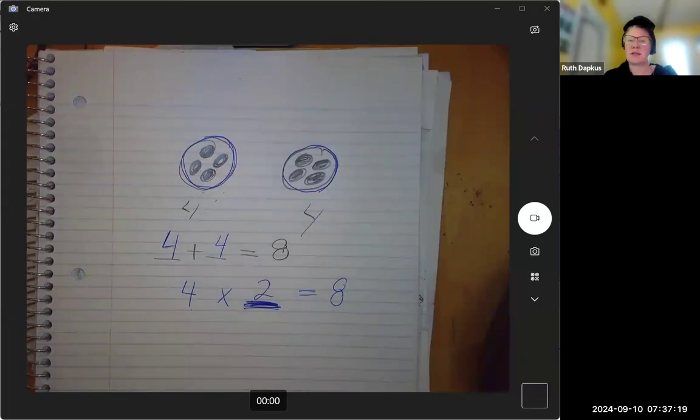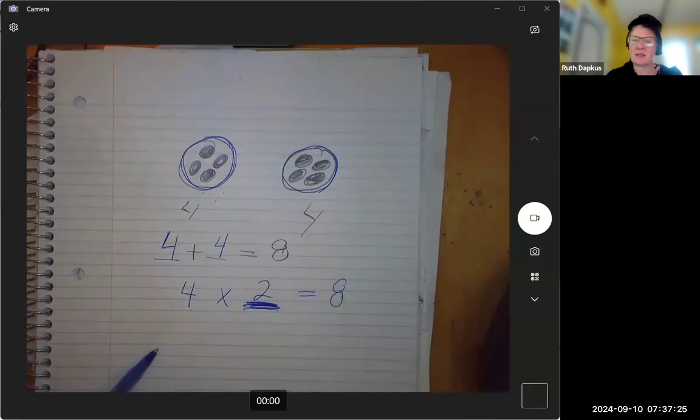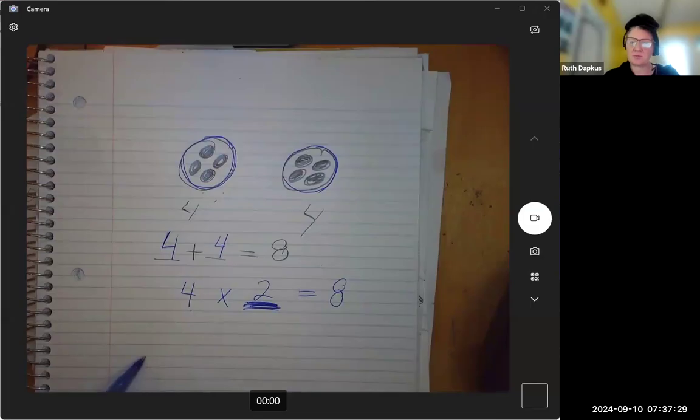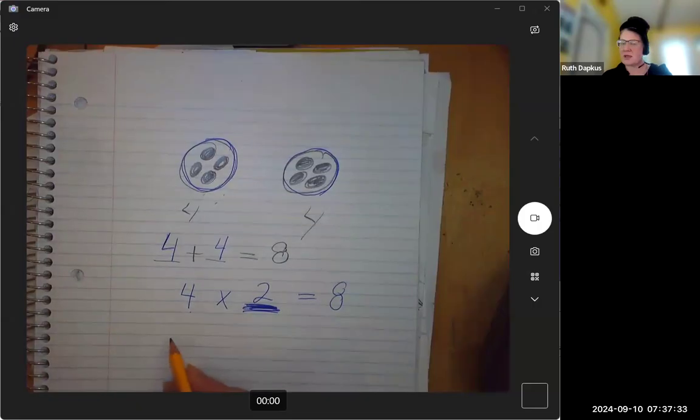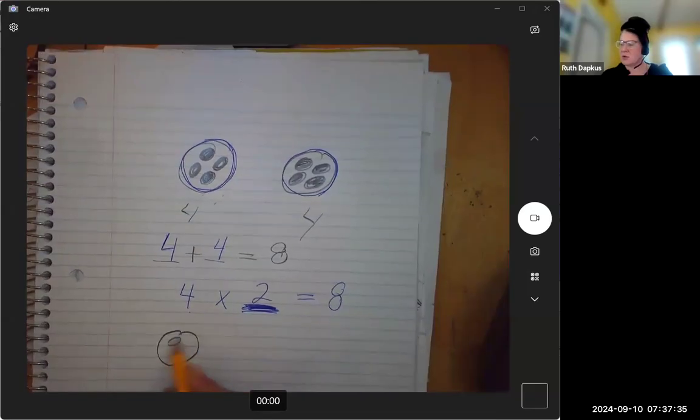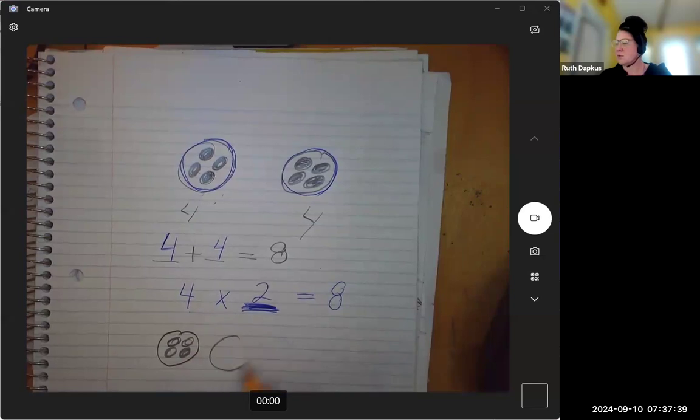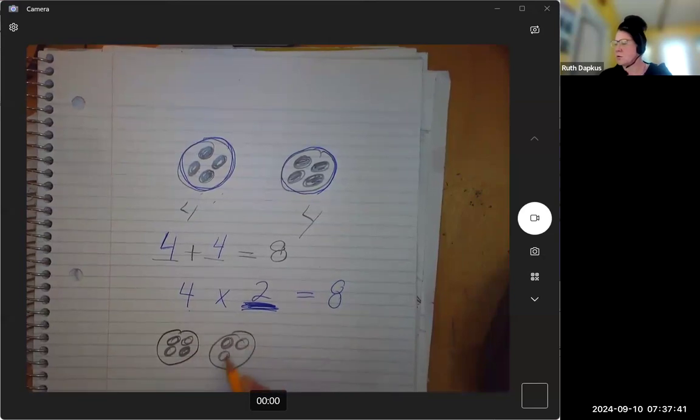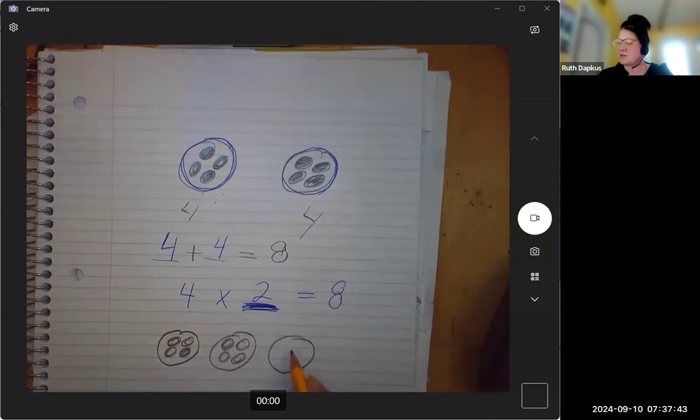So we're going to practice writing multiplication sentences just like this, writing multiplication sentences from equal groups. And we can also try another one. So what if we had four and four and three? Hmm, what's wrong here?